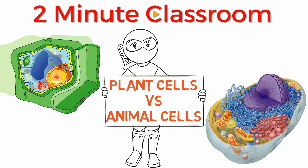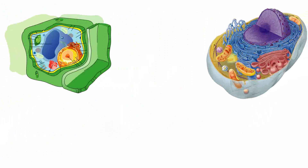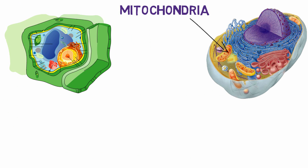Plant and animal cells are remarkably similar, but there are three main differences I will discuss. Both plant and animal cells have mitochondria, but only plant cells have chloroplast.